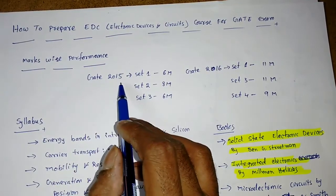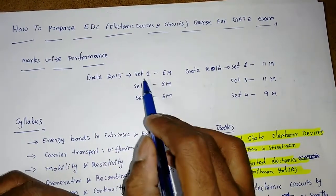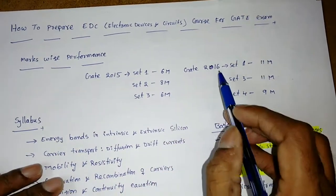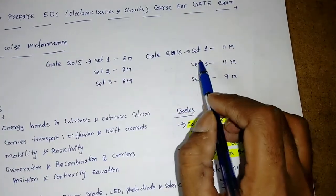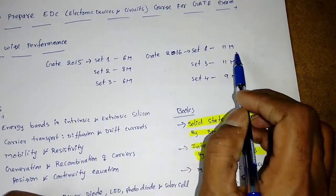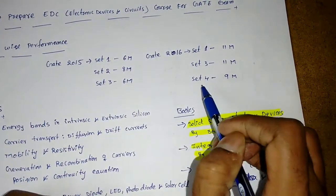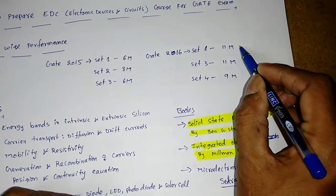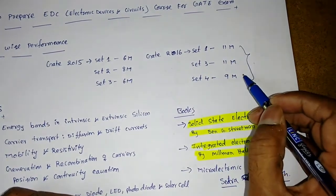In GATE 2015, there were three sets: Set 1 had 6 marks, Set 2 had 8 marks, and Set 3 had 6 marks. Similarly, for GATE 2016, it increased—Set 1 had 11 marks, Set 3 had 11 marks, and Set 4 had 9 marks. This depends on who is preparing the questionnaire, like IIT Guwahati, IIT Roorkee, or IISc Bangalore.